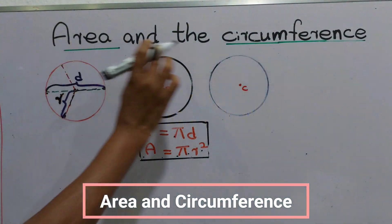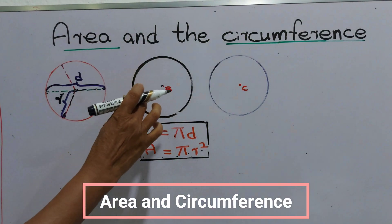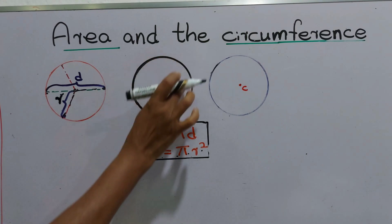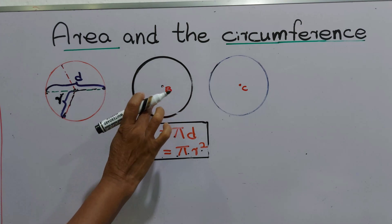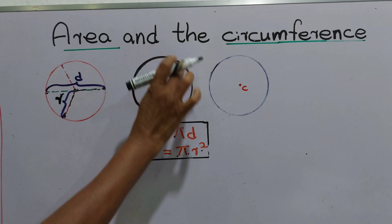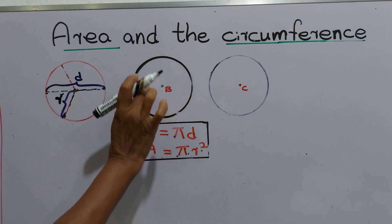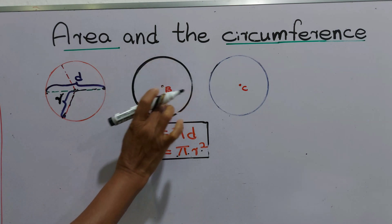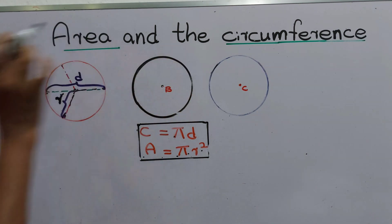Today our lesson is area and the circumference. What's an area? Area is the total amount of space inside the shape, or we can introduce amount of space inside this circle. Amount of space inside the shape is called an area.